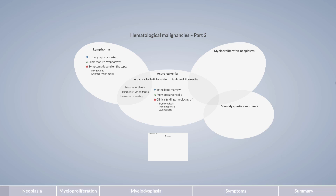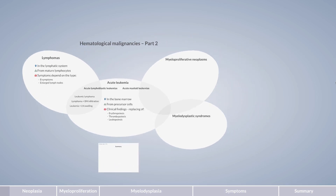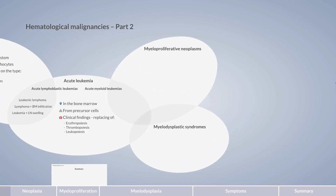Hematological Malignancies. The myeloid stem cell disorders include acute myeloid leukemias as well as myeloproliferative and myelodysplastic disorders. These three groups overlap one another as they share common features in their development. In the following, we will explain the differences between these three groups.